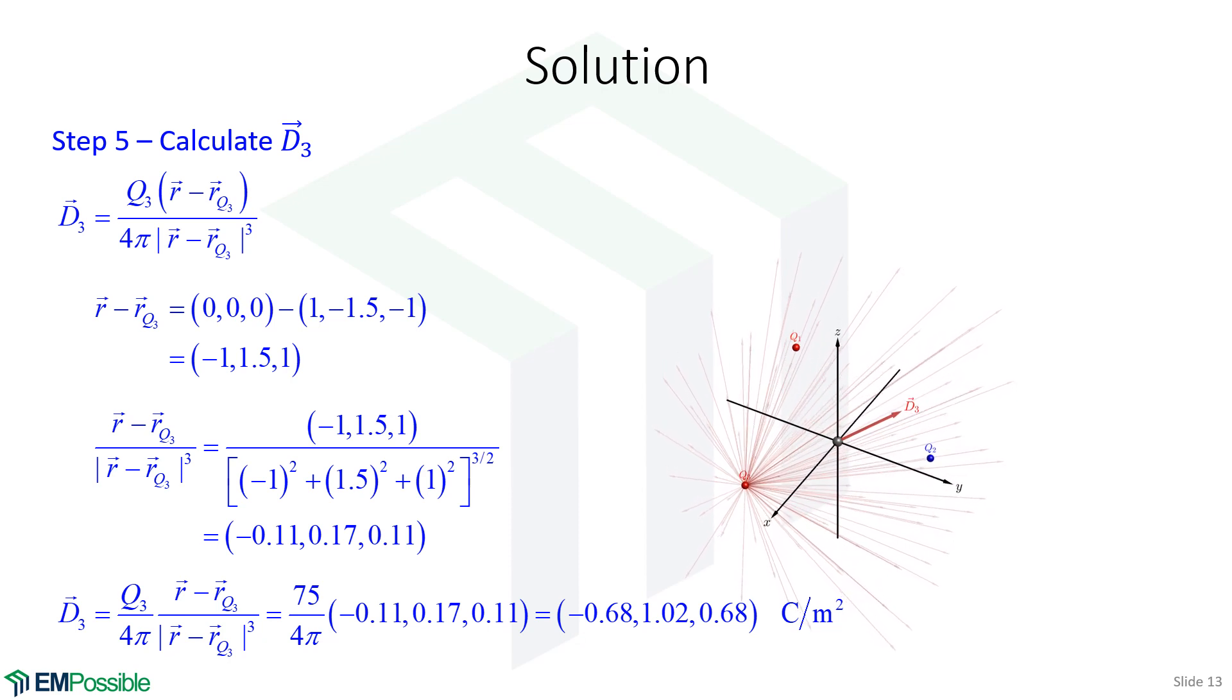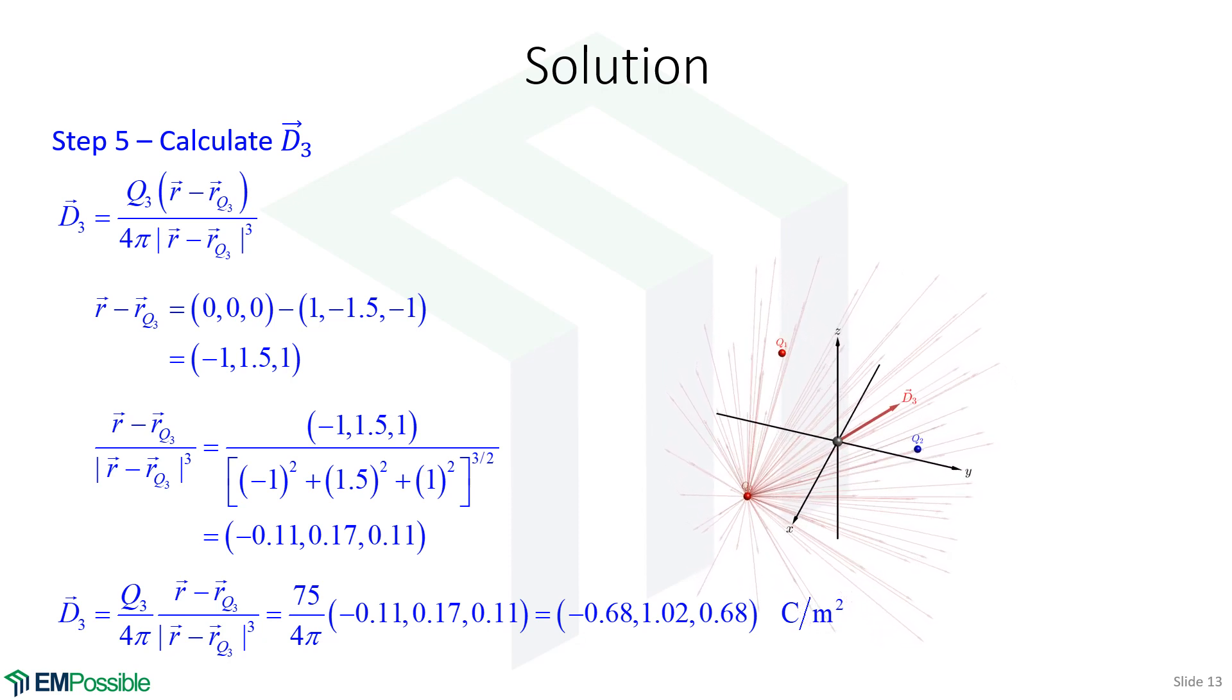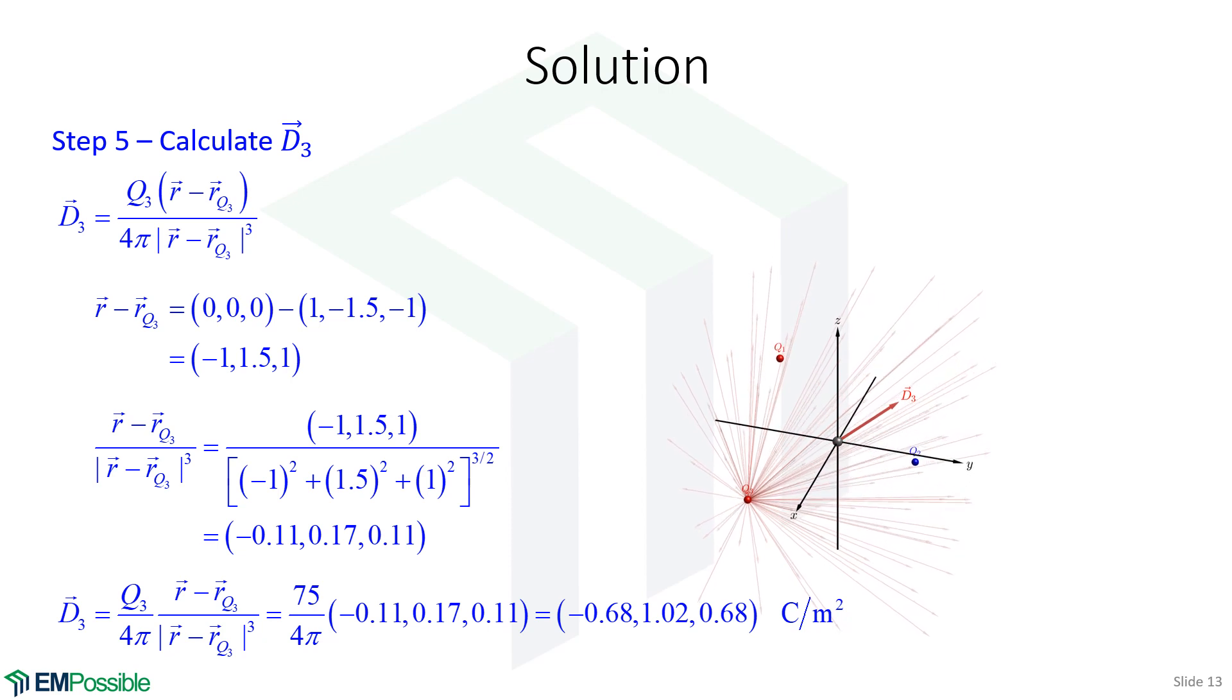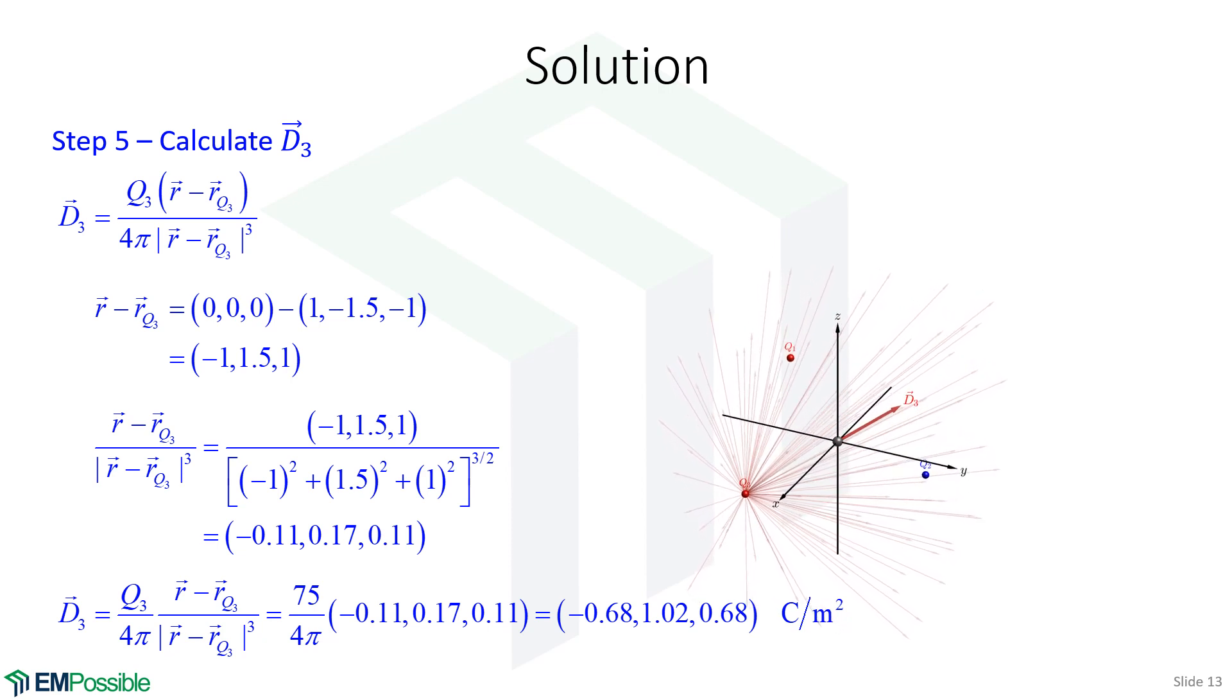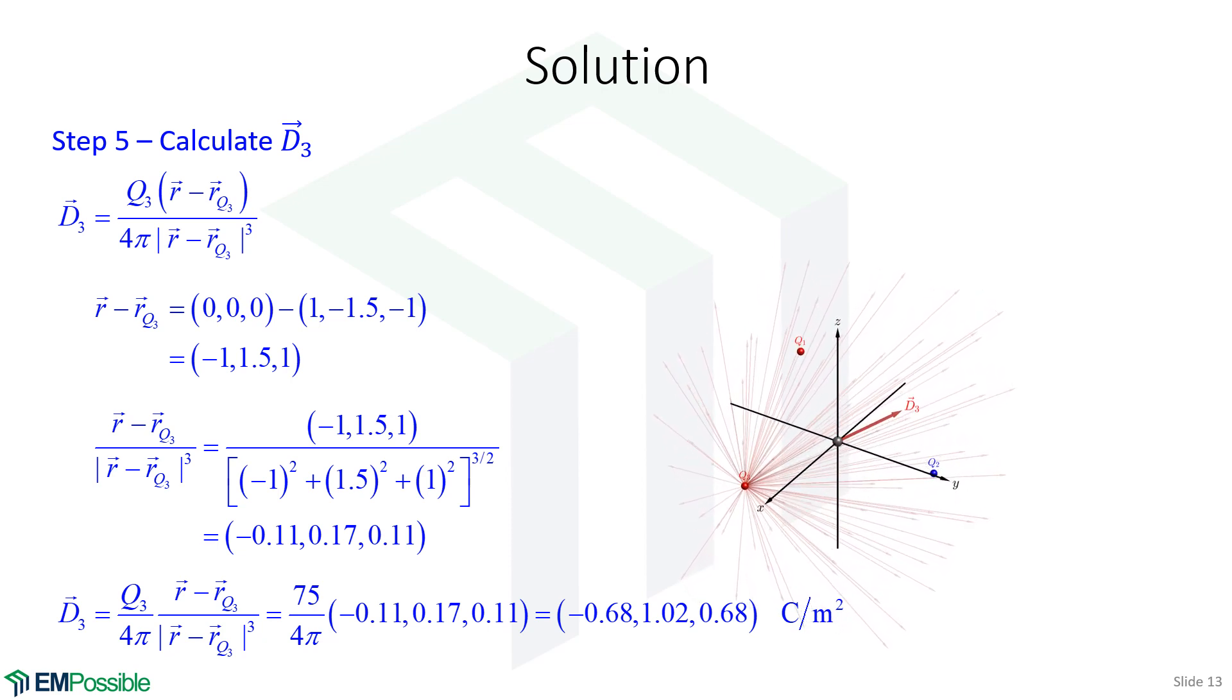You can already get the pattern here. If there was a fourth, fifth, sixth, seventh charge, we would just keep repeating this. It's very tedious, but we can work through it. It's not difficult math, just tedious math.